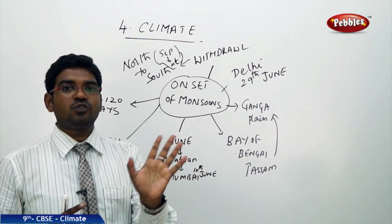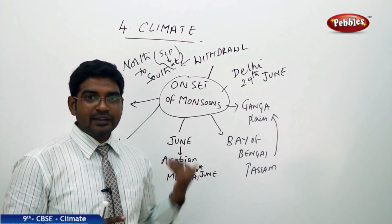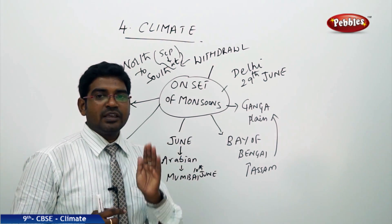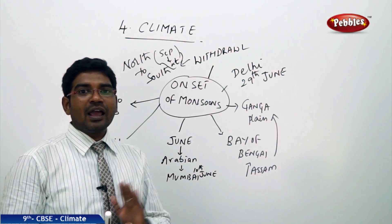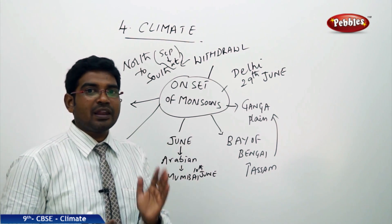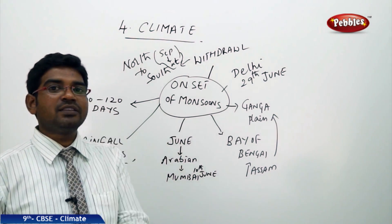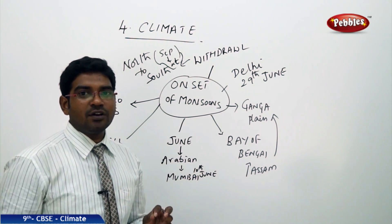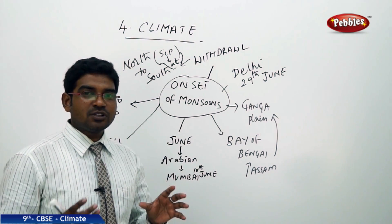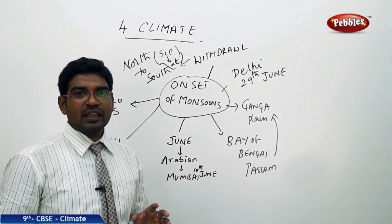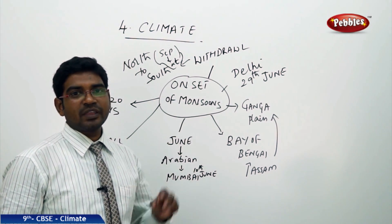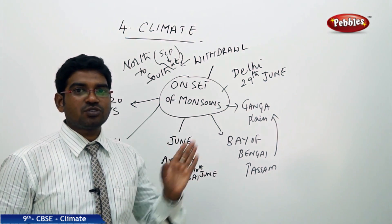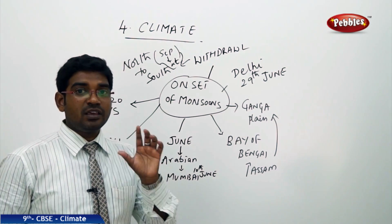The monsoons turn completely off the Indian land by the end of December or the first week of January, during which time India experiences the winter monsoons. The island parts of India receive the first showers, and then again in April and May, and also in December and January. That is how the onset and offset of the monsoons happens through a systematic procedure, influenced by many scientific factors.